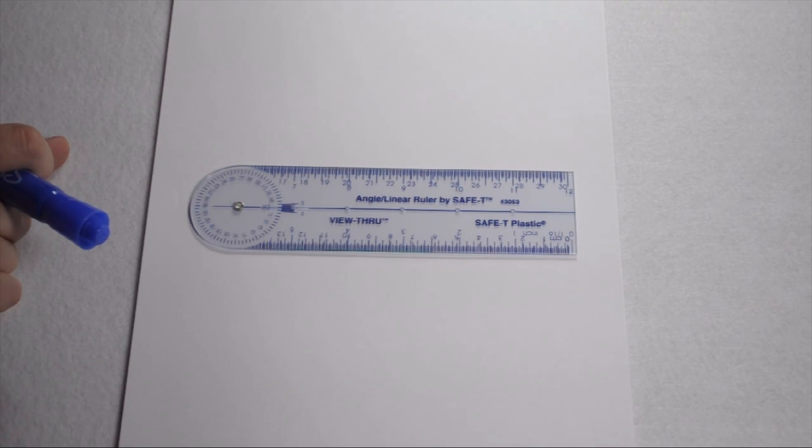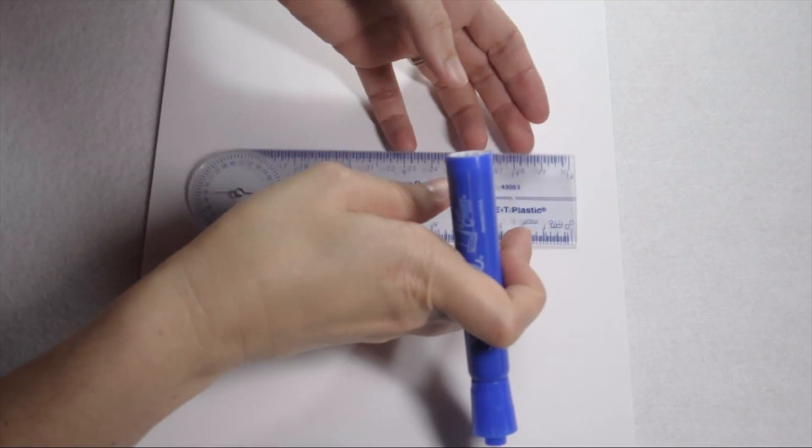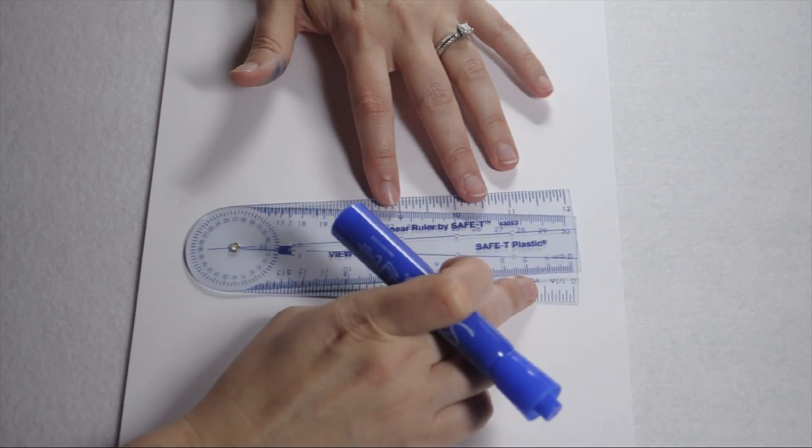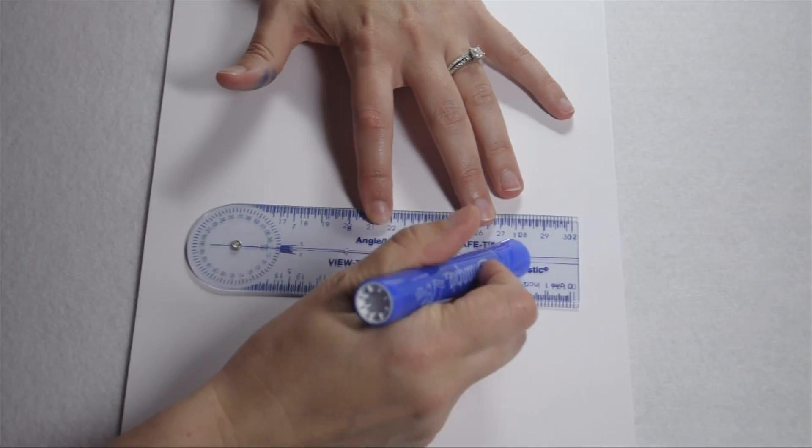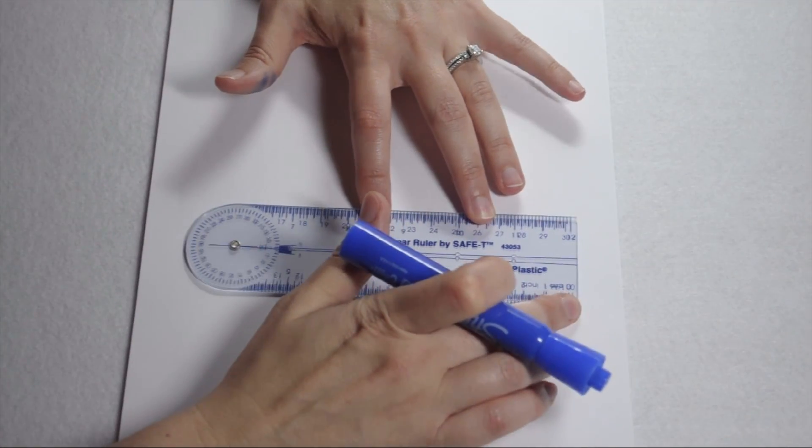Today we're going to look at using an angle ruler to create angles. We're going to start by drawing a 90 degree angle. In order to draw with an angle ruler, I need to first make sure that it's facing up so that I can read the words on it.